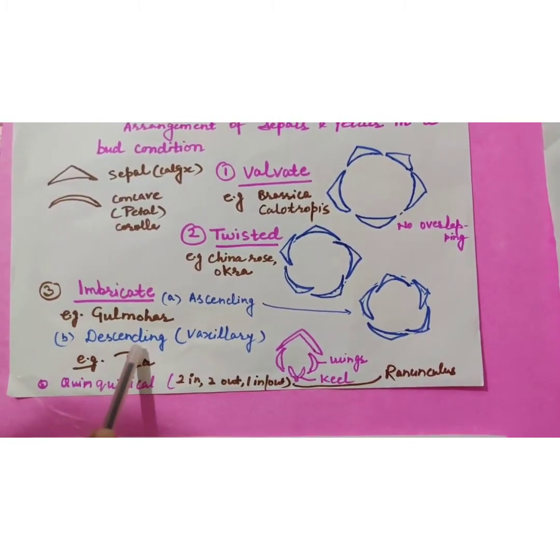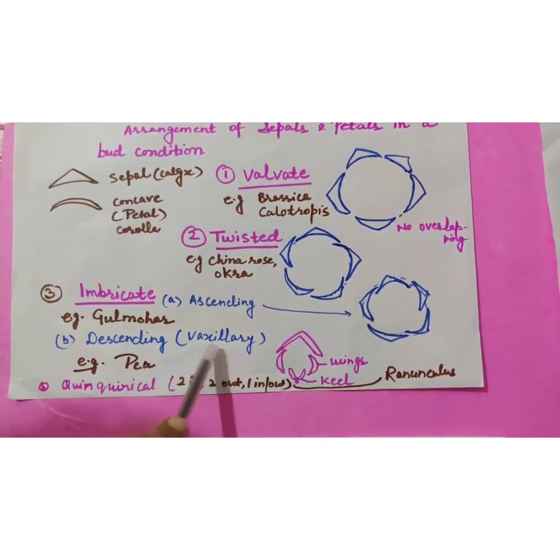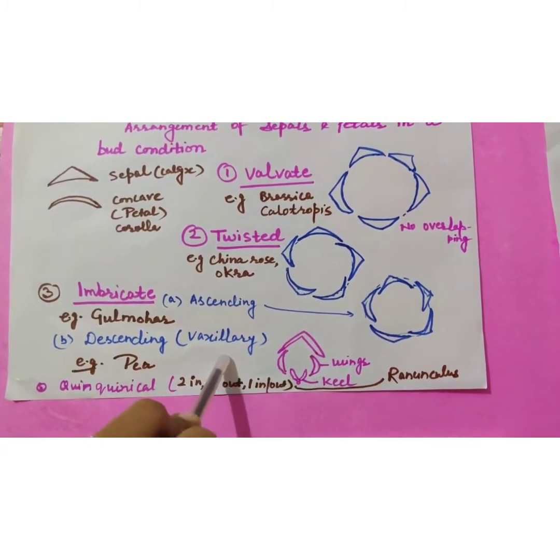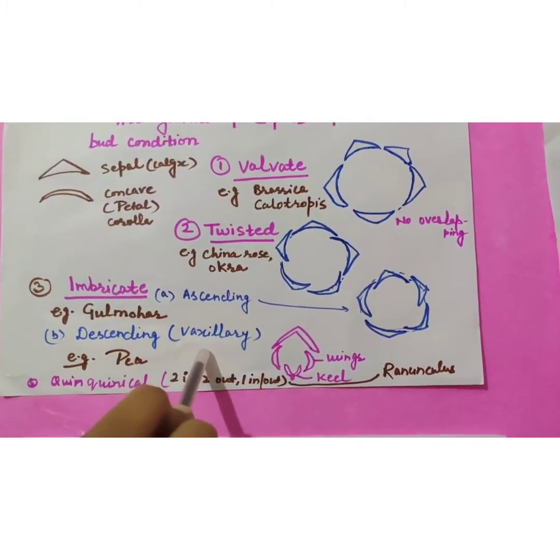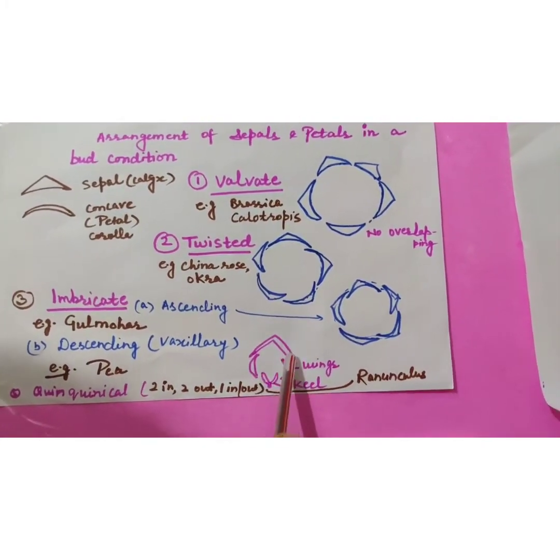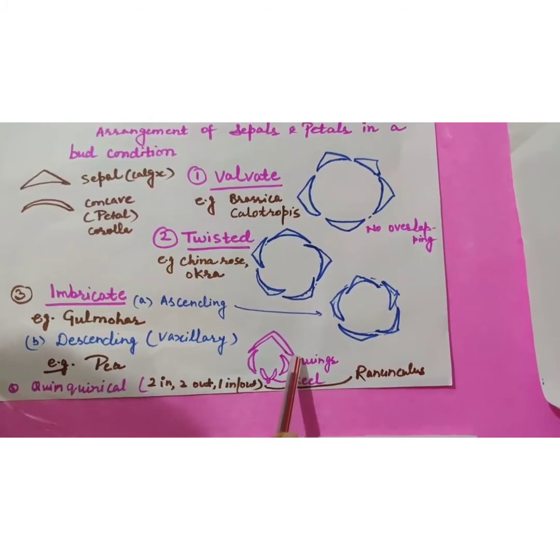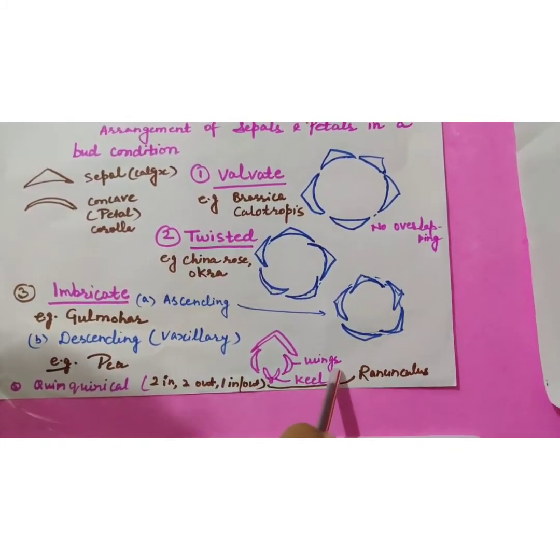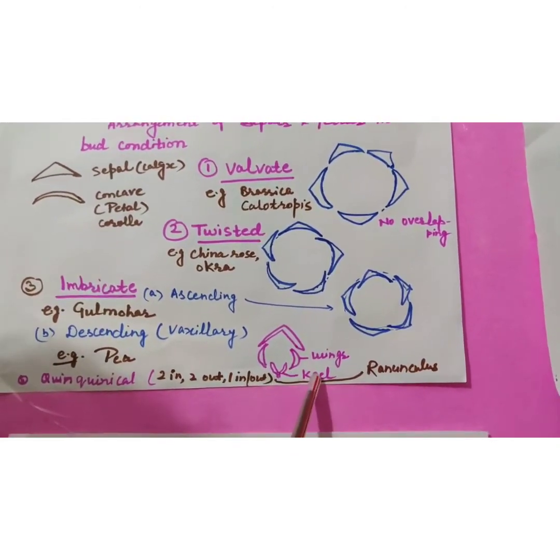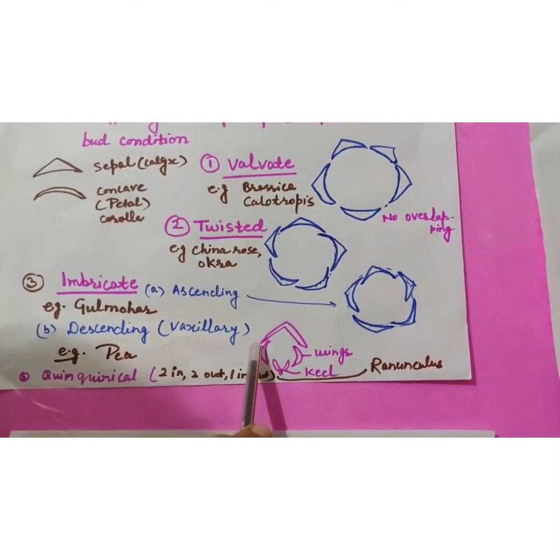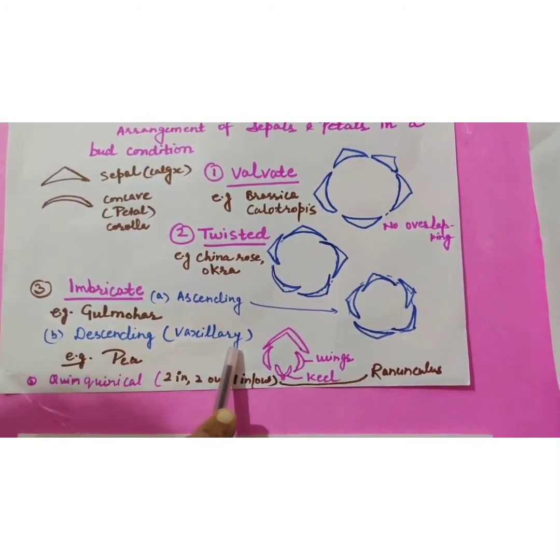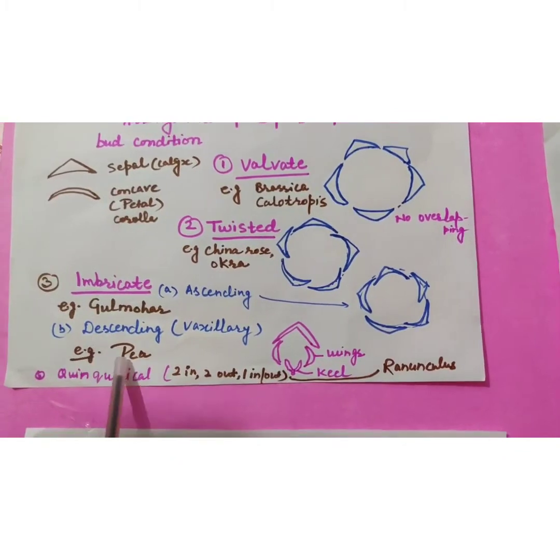Descending imbricate aestivation, vexillary. Easily you can find this type of vexillary aestivation in pea plant, in pea flower. In pea flower, one petal is very big in size, which overlap the next two wings they are called, and innermost two together they are known as keel. If we find such type of arrangement in a flower, that is called vexillary aestivation. Examples are pea plant as I already discussed.